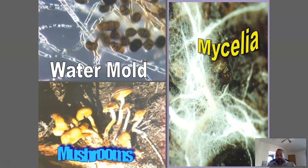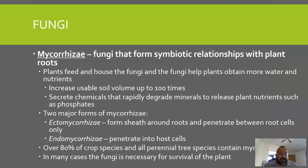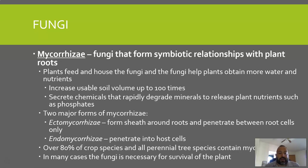Here are examples of mycelia on the right — the thread-like structure spreading through soil — mushrooms on the bottom left, and a water mold on the top left. Mycorrhizae is a fungi that forms a symbiotic relationship with plant roots: the plant feeds and houses the fungi, and the fungi helps the plant obtain more water and nutrients by spreading further than plant roots can reach, increasing usable soil volume up to a hundred times.